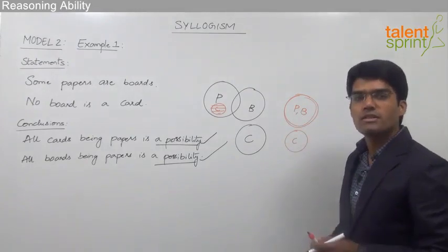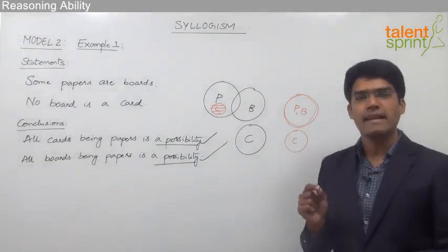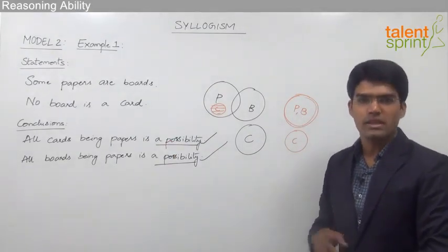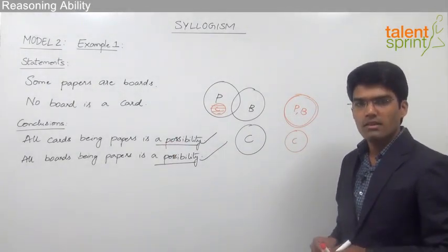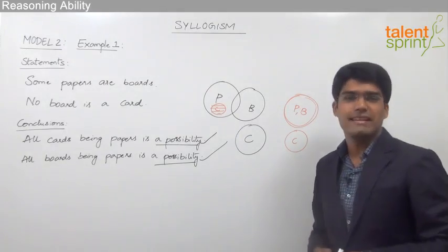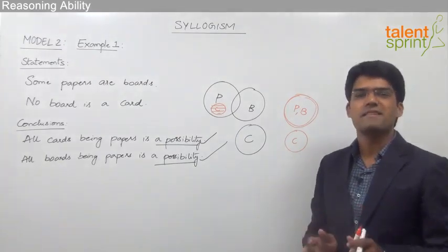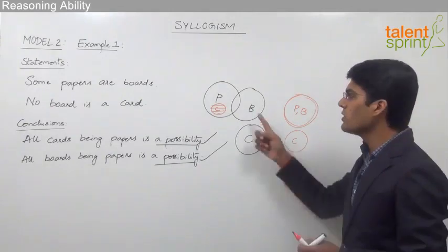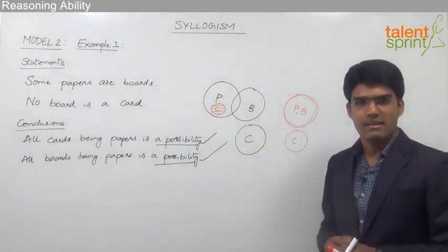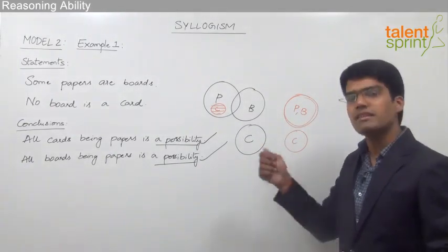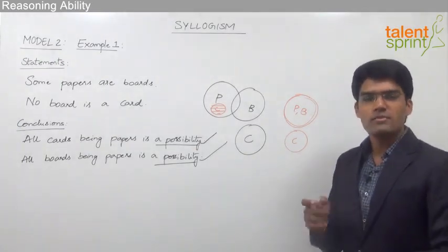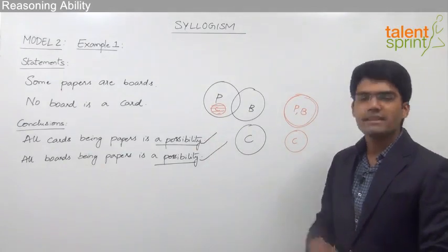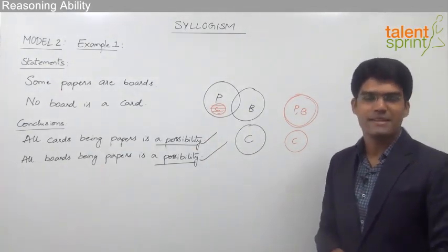This is how we just need to find at least one diagram which can prove that the given possibilities follow the given statements. The basic difference between a conclusion and a possibility is that a conclusion should be true in all the various possible cases, whereas a possibility may be true in at least one of the cases. When it comes to possibility, we should be able to draw at least one diagram which shows that the given possibility follows the given statements.